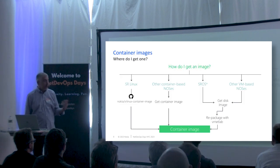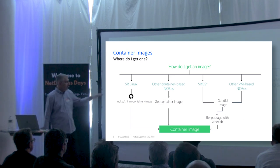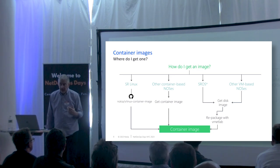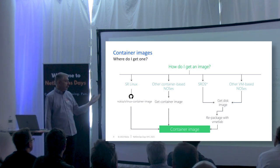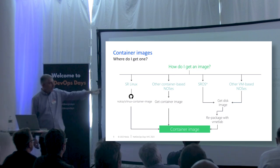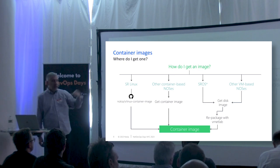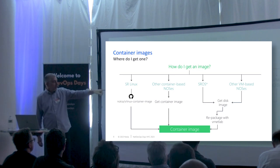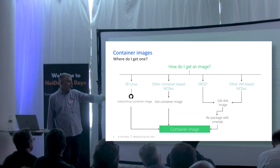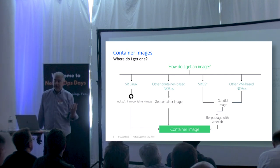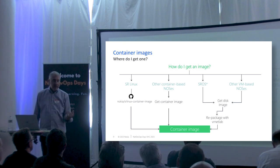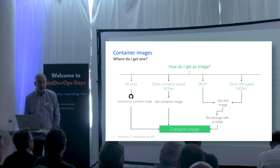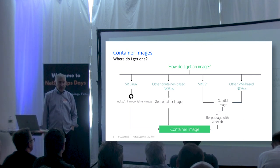If you want other container images, it's straightforward — if you have a container image from another vendor and access to that image, you can point your topology file to that container and it gets pulled right into your topology. SROS is an example of a Nokia operating system that's not natively containerized, and there are still a large number of these. There's a tool one of our developers forked called VRNetLab — it's a way of taking VM-based NOSs and managing them in a container framework. You can grab that project and get the resulting container image for your topology file, with a bunch pre-built and available.